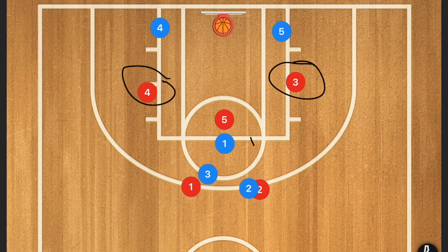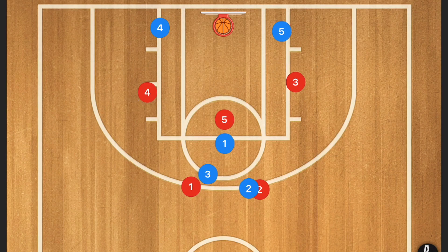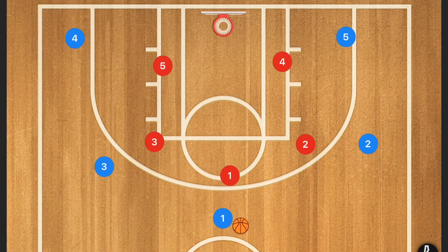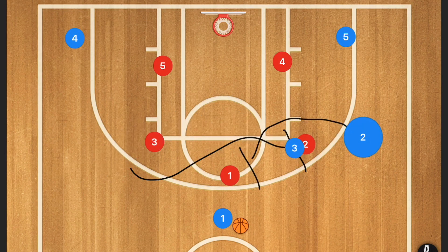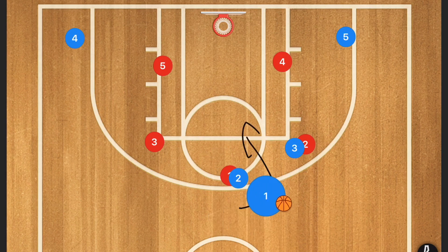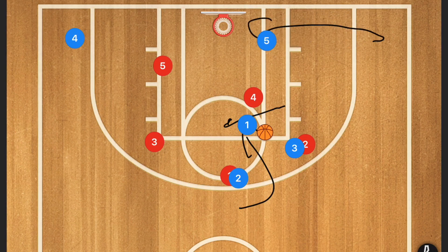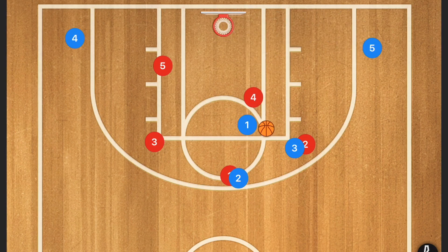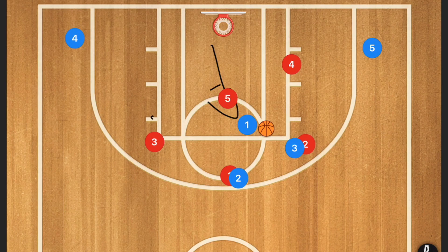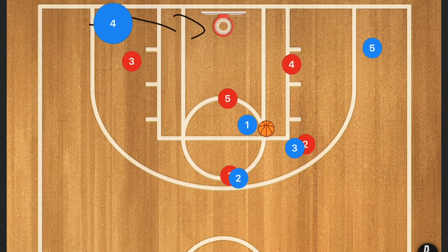This also works extremely well against a 3-2 zone, though it would be run slightly differently. Against a 3-2 zone we would run this on one of the two sides — for example, if we ran it on the right side, player one would still attack down. In most cases player four will make the mistake and come up to guard, giving player five a wide-open lane toward the basket. If player five pops up and player three doesn't fill down to protect the weak side, player four should still be able to attack baseline for that layup or dunk.